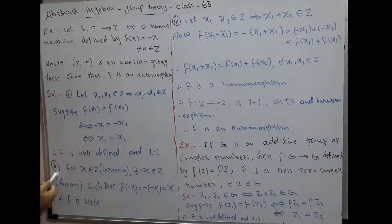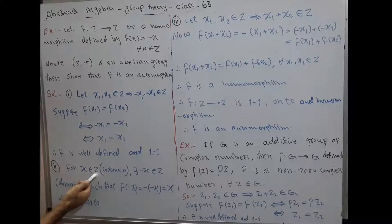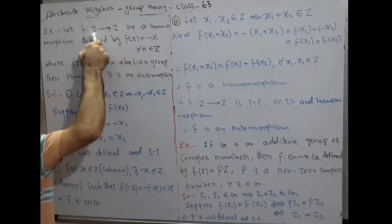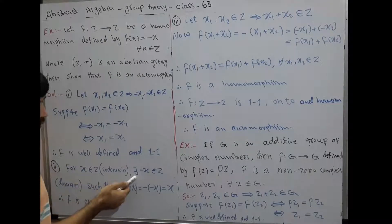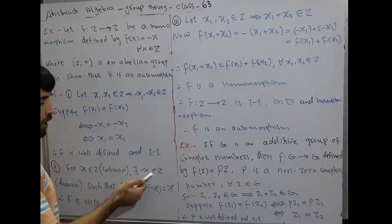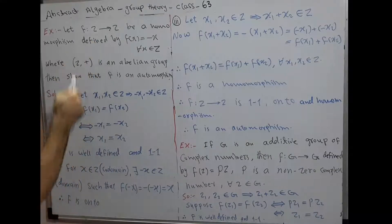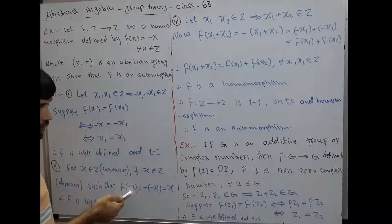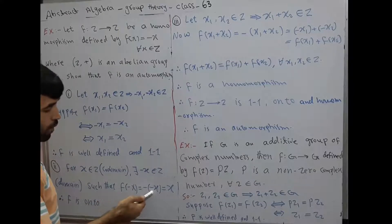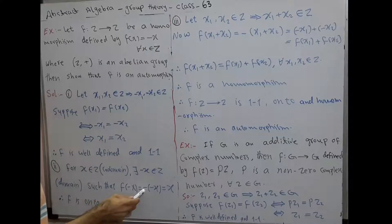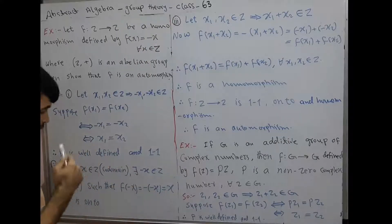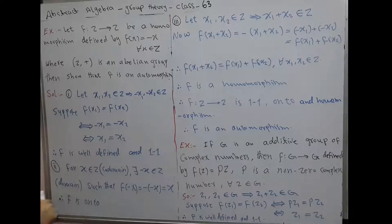Number two, we want to prove that F is onto. For x belonging to Z from the codomain, there exists -x belonging to Z from the domain, such that F(-x) = -(-x) = x. Therefore, F is onto.